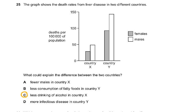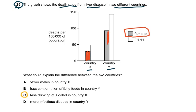Question 25: The graph shows the death rates from liver disease in two different countries, X and Y. I'm coloring the females in red and the males separately. In both countries, males have higher rates than females, but in country Y both males and females have much higher rates than in country X.